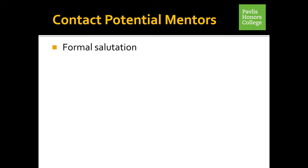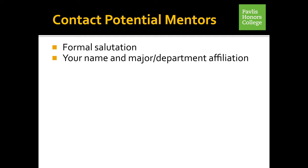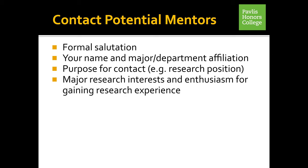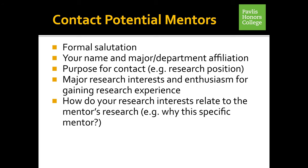When it's time to contact potential mentors, begin your email with a formal salutation. Always refer to the faculty mentor as Doctor or Professor. Be sure to include your name, your major or department affiliation, and the purpose for contact - that you're interested in a research position. Include your major research interests and show your enthusiasm for gaining research experience. Be sure to show how your research interests relate to the mentor's research and why this specific mentor is important for you to contact.